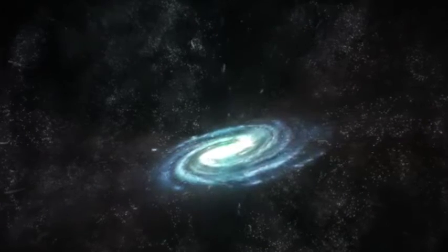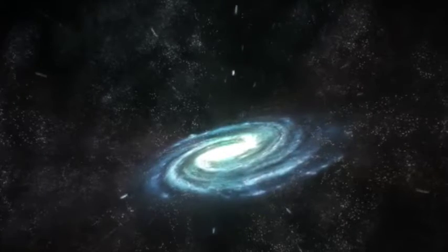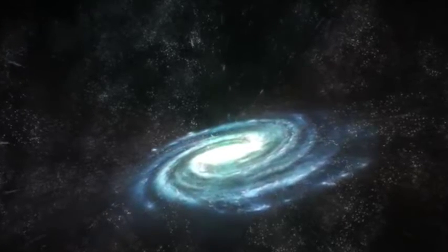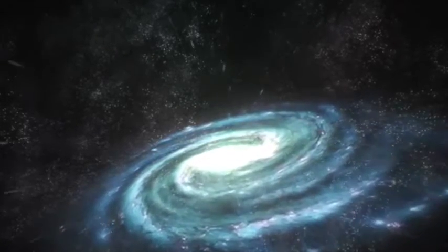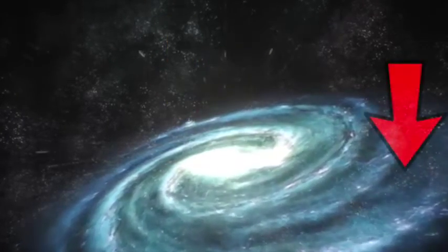To explain what Seyfert galaxies are, I first need to explain some basics about galaxies. There are three main types of galaxies. The first one is a spiral galaxy, which has three main parts: a bulge, disk, and halo.